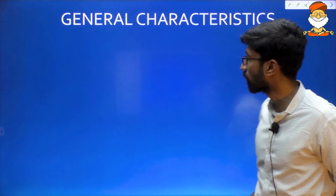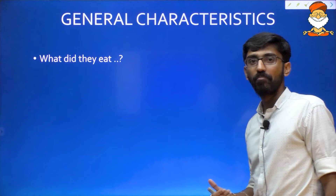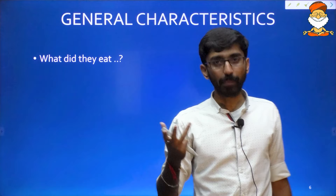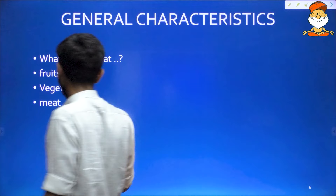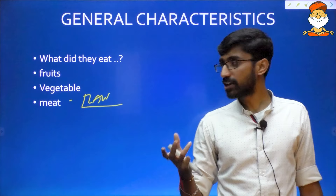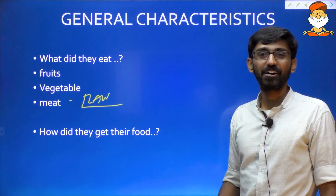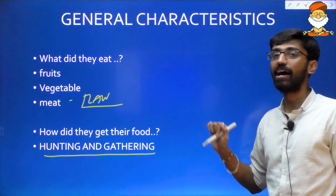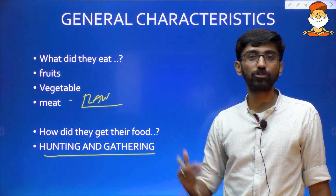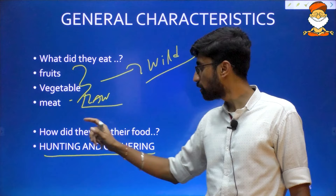What did Paleolithic people eat? They ate fruits, vegetables, and meat — including raw meat. But how did they get their food? They did not use Swiggy or Zomato! Their subsistence was based on hunting and gathering. They used to hunt for meat and gather fruits and vegetables from the wild, that is from the forests. They used to hunt for food and move accordingly.